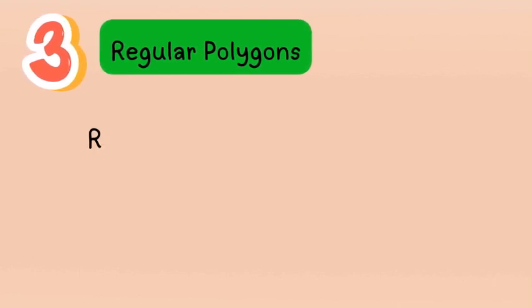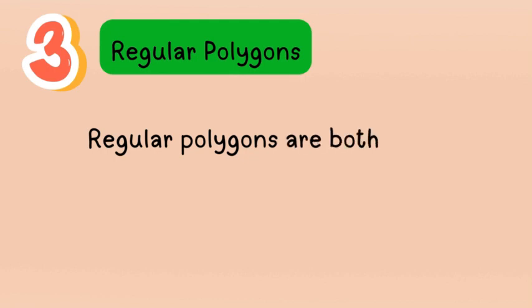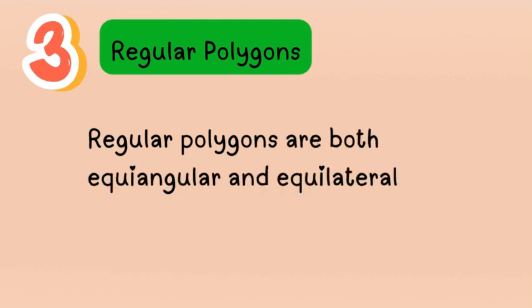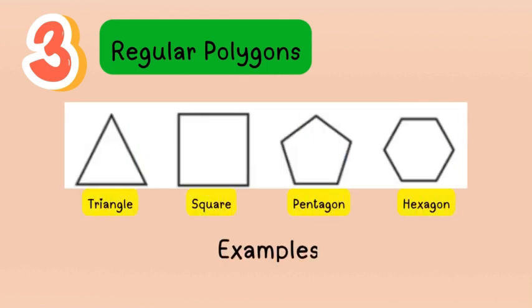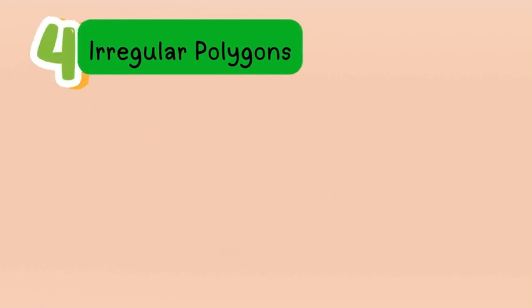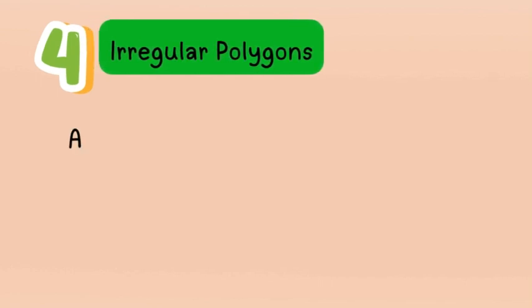The next type is regular polygons. Regular polygons are both equiangular and equilateral. Examples include the triangle, square, pentagon, and hexagon — all of which can have equal sides and equal angles.